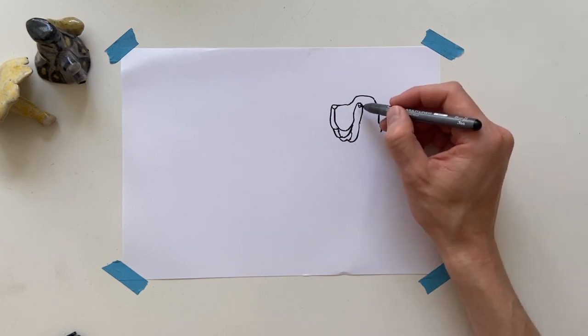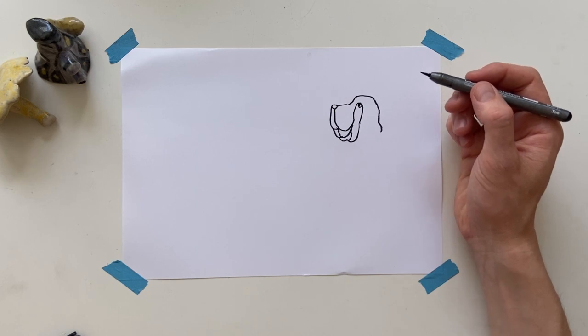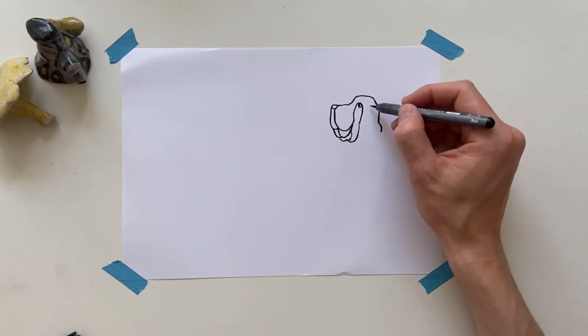Make a pupil for the eye here, and I'll make sure that the pupil kind of touches the eyelid so that it looks very lazy, this dog. I'm gonna draw the ear now.